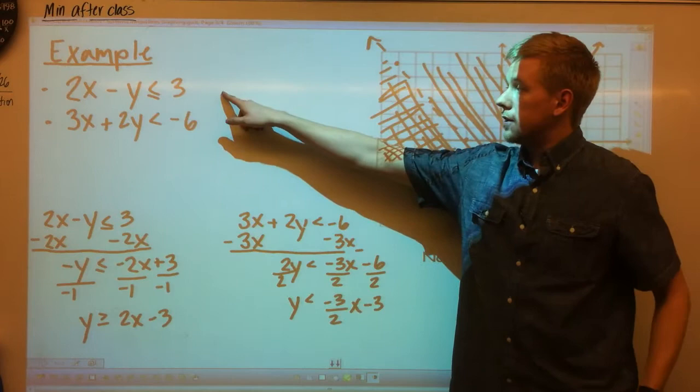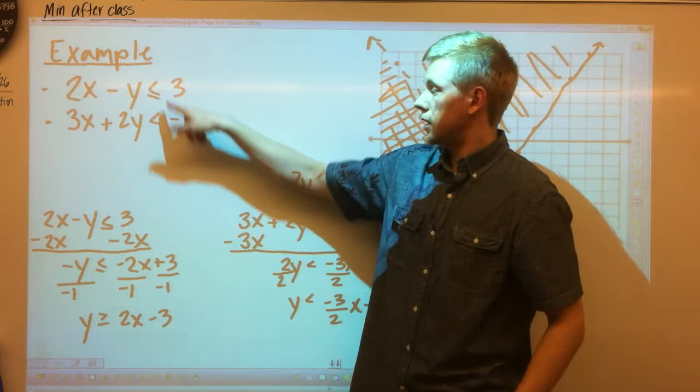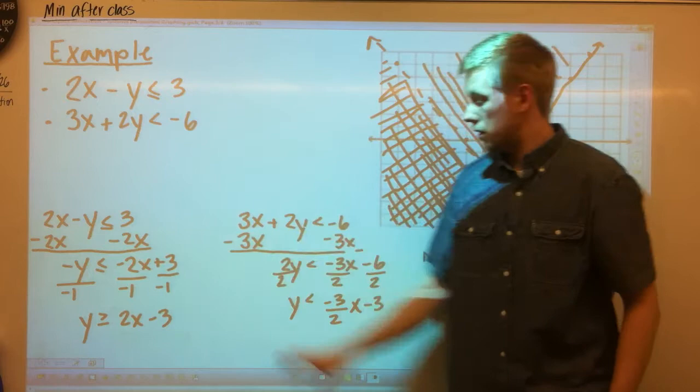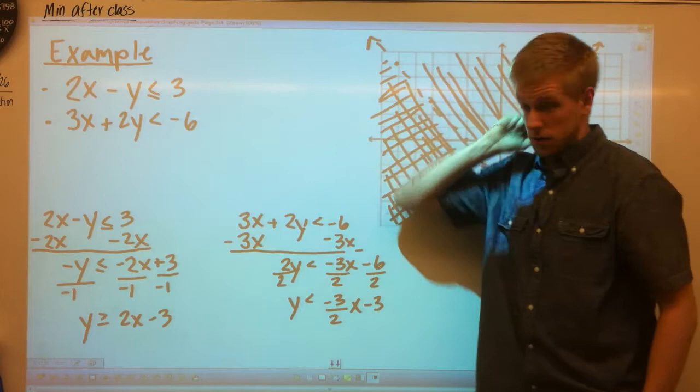The next two, 2x minus y is less than or equal to 3, and then we have 3x plus 2y less than negative 6. So there's a difference here on my signs. Both of these are in standard form. You need to change them to slope intercept form. I did that here. I'm not going to walk you through it because by now you should know how to solve for a variable given an equation.